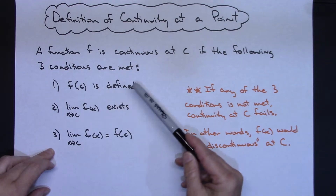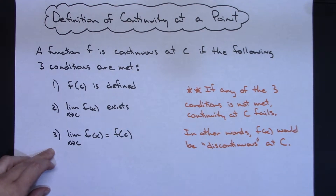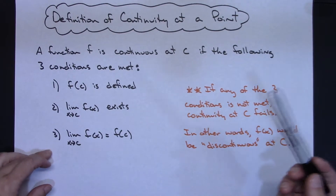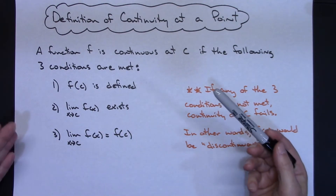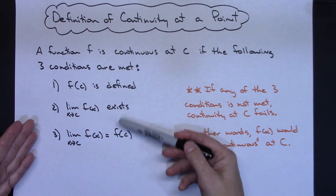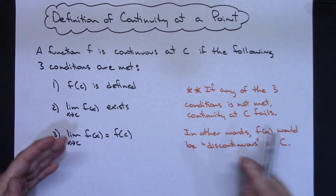Now if at any point any one of these three conditions is not met, then continuity at c fails. In other words, f of x would be discontinuous at c if any one of these things failed to exist.